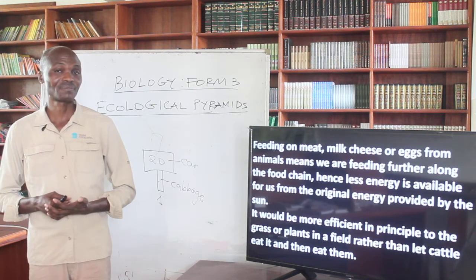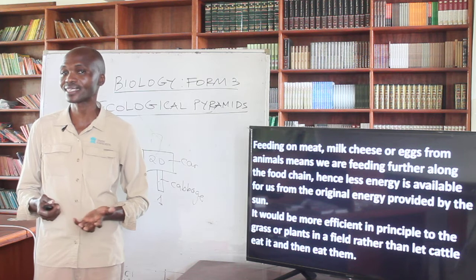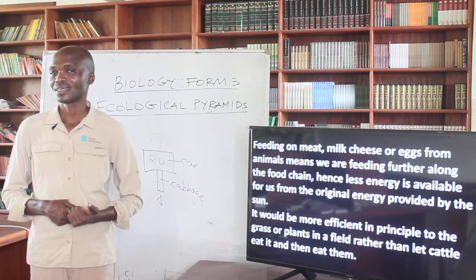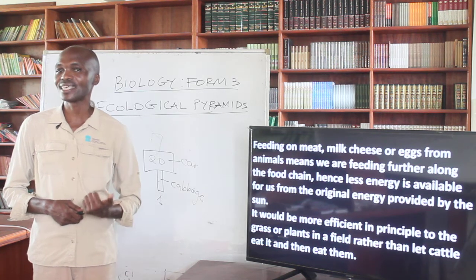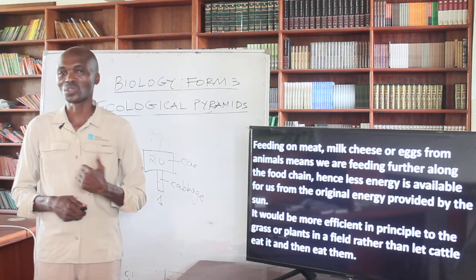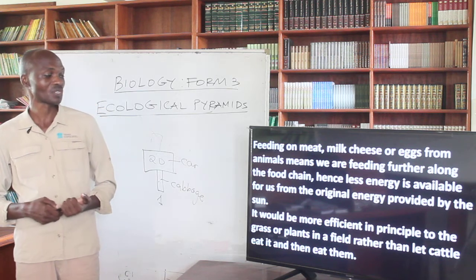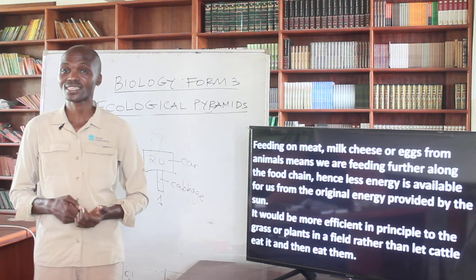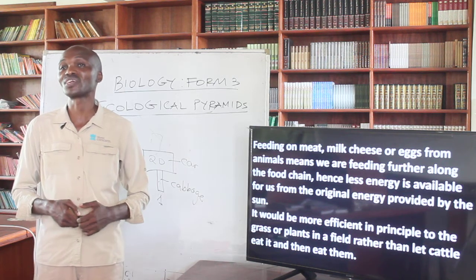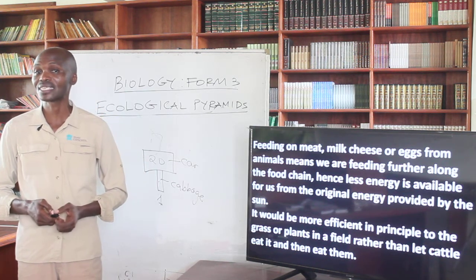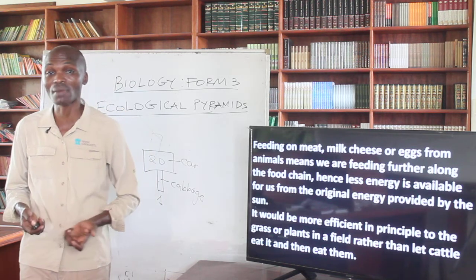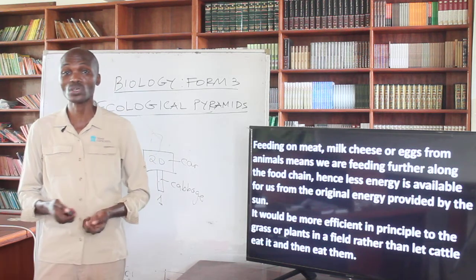Feeding on meat, milk, cheese, and eggs means that we are feeding further along the food chain, and therefore less energy is available to us from the original energy provided by the sun. So it would be more efficient, in principle, if we were to feed on grass or plant materials rather than feeding on meat from animals like cattle.